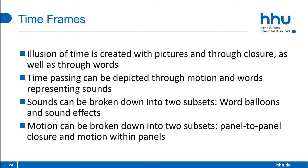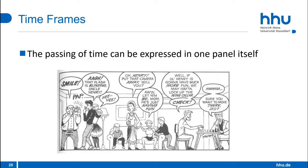The illusion of time in graphic novels is created with pictures and through closure in the intervals between them, as well as through words. Time passing can be depicted through motion and words representing sounds. These sounds can be broken down into two subsets: word balloons and sound effects, while motion can also be broken down into two subsets: panel-to-panel closure and motion within panels. The passing of time can even be expressed in one panel itself, with each figure arranged in relation to their words from left to right in a sequence, each occupying a distinct time slot.